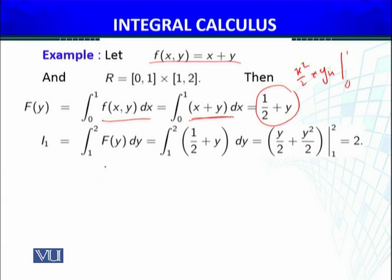So I₁, the iterated integral we defined from F(y), I₁ equals ∫[1 to 2] (1/2 + y) dy. Now this is the function of one variable. As I integrate, I will integrate this way: y/2 + y²/2, and apply limits. So this is 2.